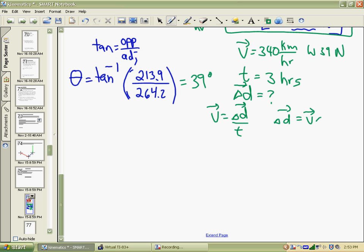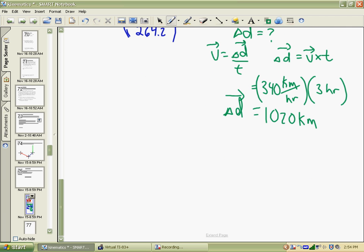So we take our 340 kilometers per hour for three hours, which is 1,020 kilometers. Well, that is a distance and is not a displacement, but the displacement will be in the same direction as the velocity, which was west 39 north. And that is the end of our question. Hope that helps you out.